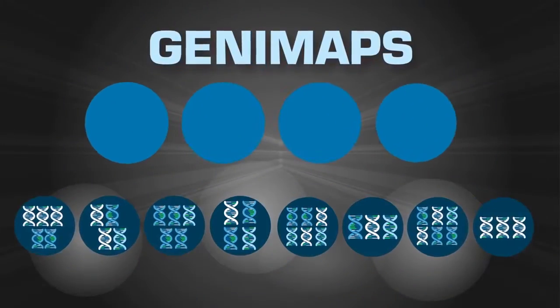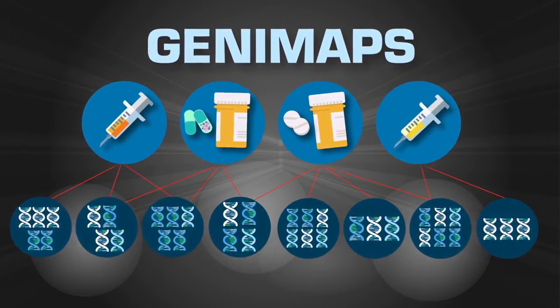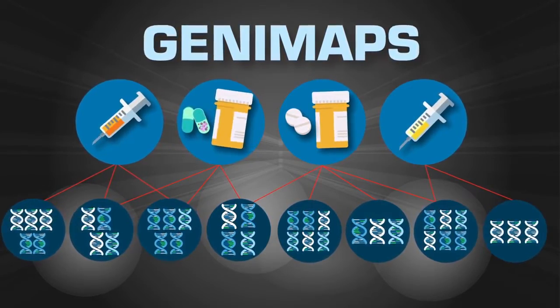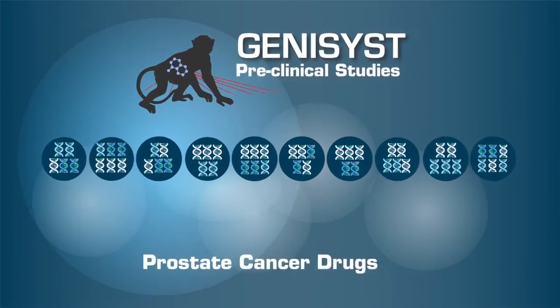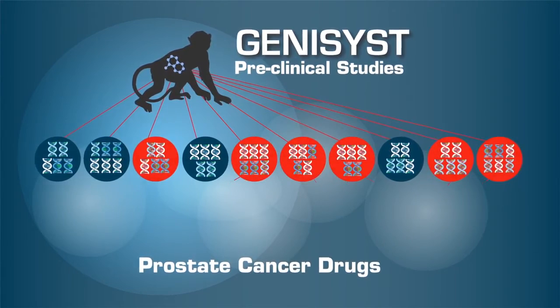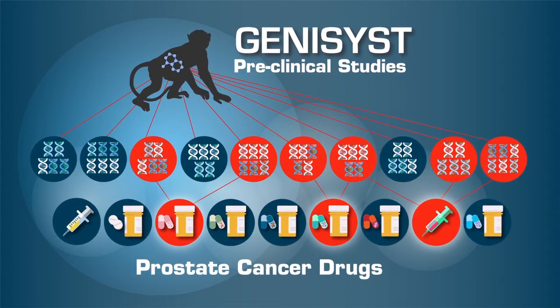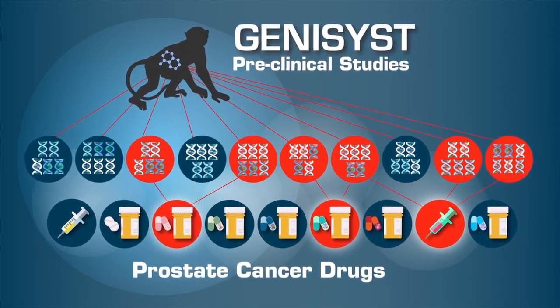Genomaps identified FDA-approved drugs that might be applicable as treatments for specific prostate cancer subtypes in a matter of weeks. Using the power of Genesys, we are able to test and identify subtype-specific prostate cancer drugs in a matter of a few months in translationally relevant models.